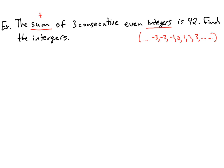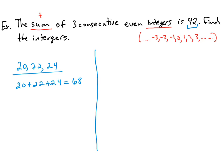An even number is divisible by 2 — so 10, 46, 5280, negative 6, negative 16, negative 38 are all even integers. Three consecutive even integers might look like 20, 22, 24. For this question we want them to add up to 42. Does 20 plus 22 plus 24 equal 42? That equals 68, so no — we need to find the correct three consecutive even integers that add up to 42.